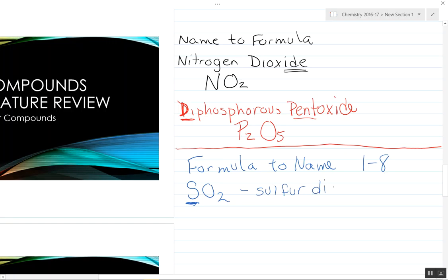Then finally, we have N2O5. Now we have two nitrogens here, so now we do have to use the prefix, so it's dinitrogen. Pent, because we have five oxygens, oxide.